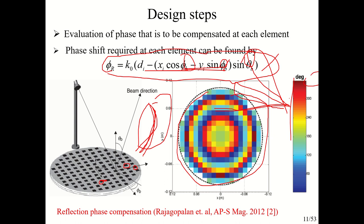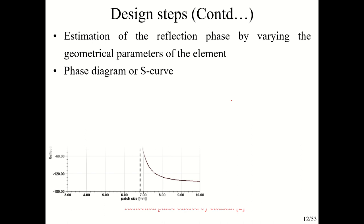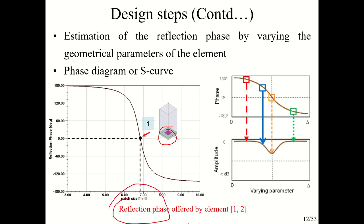Based on the expected beam direction — whether broadside (orthogonal to surface) or at a specific angle like 60° or 40° — the phase to be compensated at each position is estimated. Plotting this in MATLAB produces a phase compensation map where red represents 360° and blue represents 0°. The next step is estimating the reflection phase curve for the unit cell element — the reflection phase and reflection magnitude offered by each element.